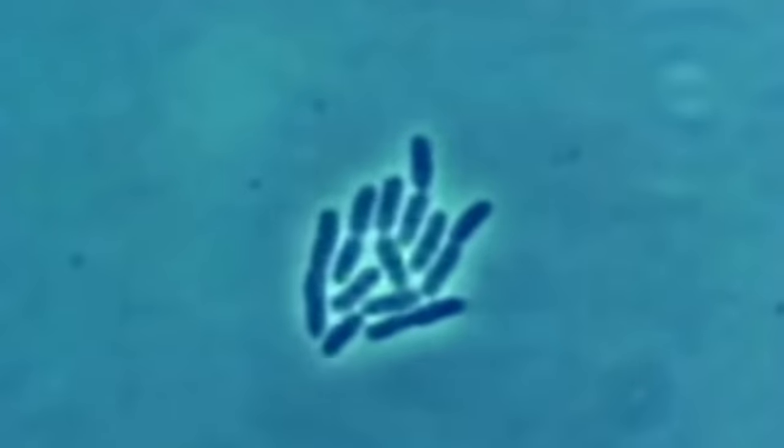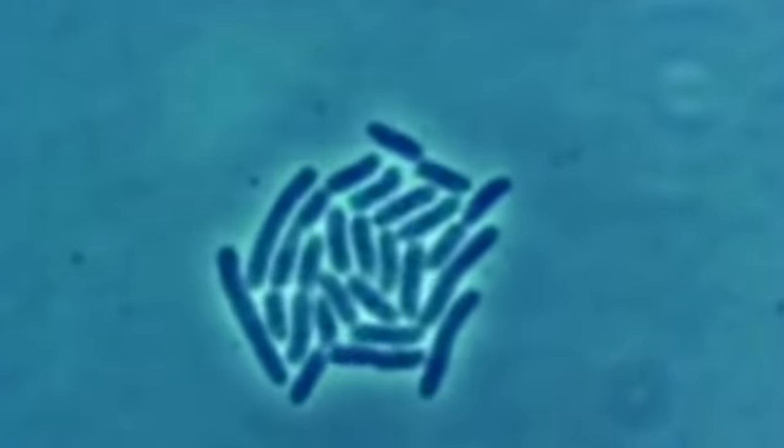Bacteria reproduces by binary fission. Whenever a single bacterium grows to twice its original size, it divides itself into two identical offspring. Under ideal conditions and with plenty of nutrient and adequate moisture, bacteria will grow and then split at a very regular rate. For this reason, we can expect the amount of bacteria in our container to double at more or less identical intervals.